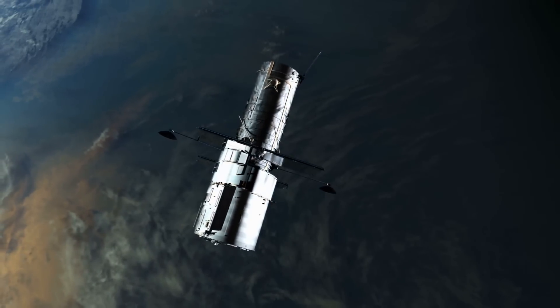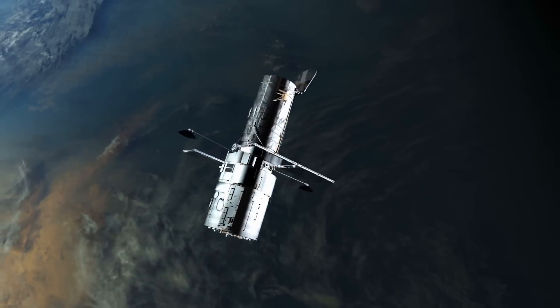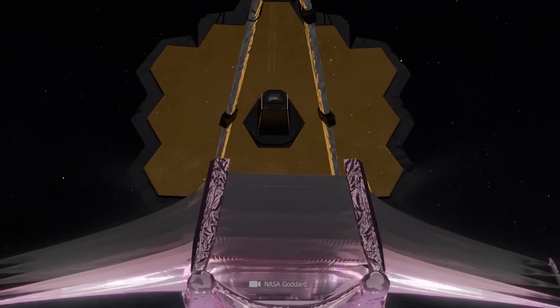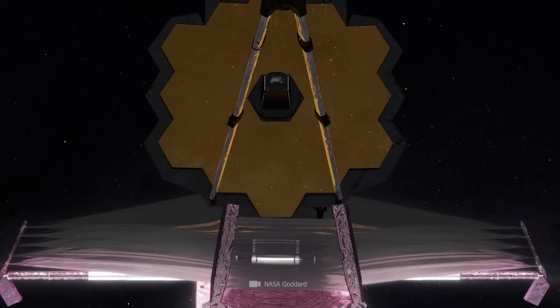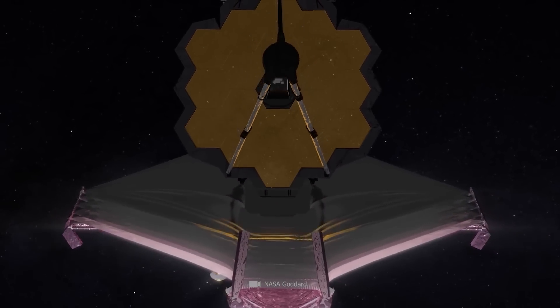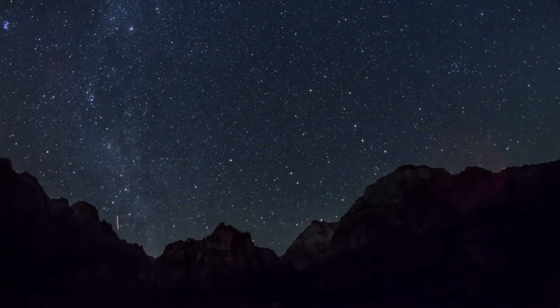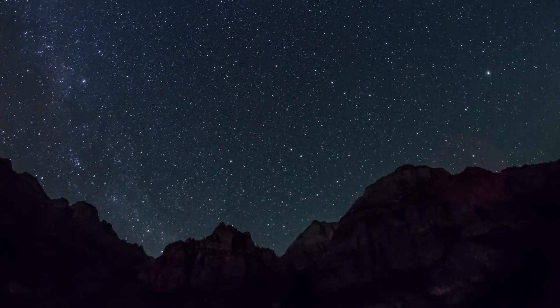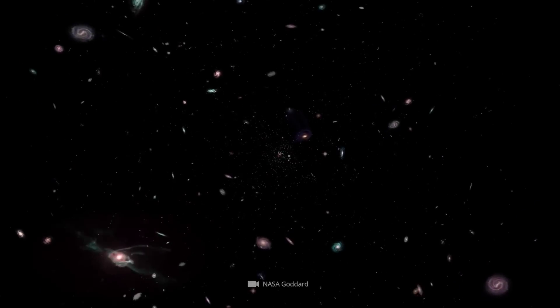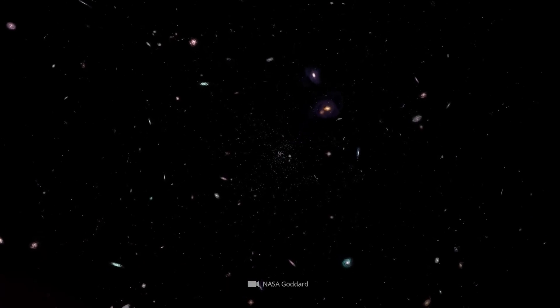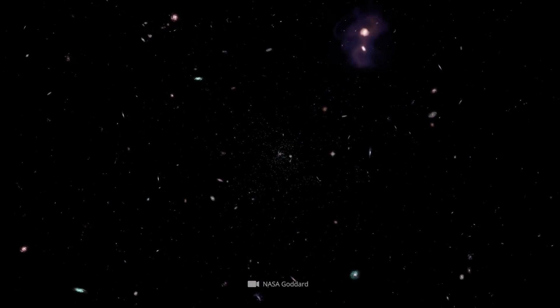After Hubble had already brought us closer to the vastness of the cosmos for more than 20 years, the successor telescope was to look even further into space. The range of James Webb corresponds to at least 13.5 billion years. Thus, the new telescope does not look much farther than its predecessor Hubble could, but Webb's view is sharper.